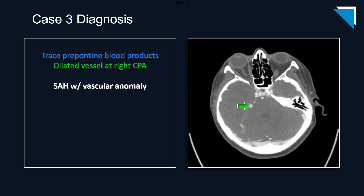This is a somewhat unsatisfying case of a subtle subarachnoid bleed due to an unknown underlying vascular anomaly. I wanted to show this case because it's basically an eye test and to remind everyone that there's no substitute for being careful and methodical in your approach.